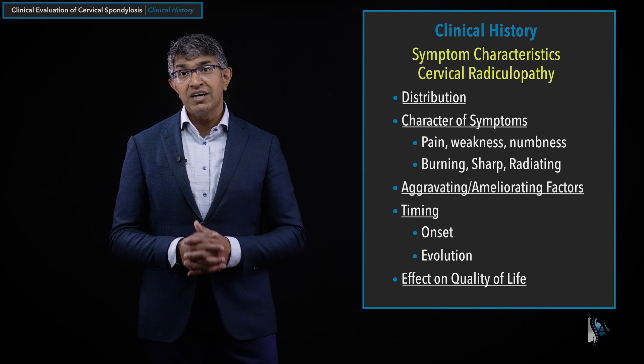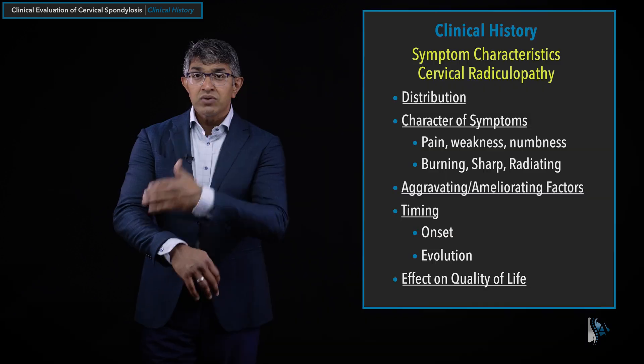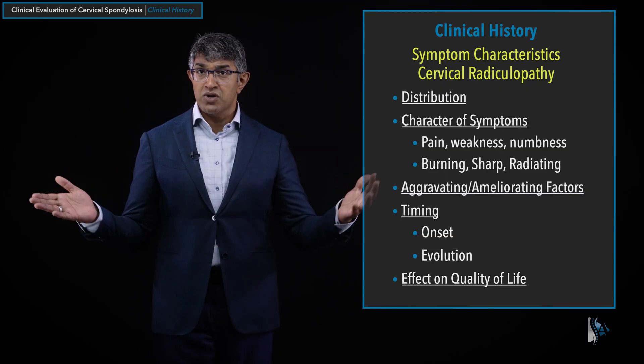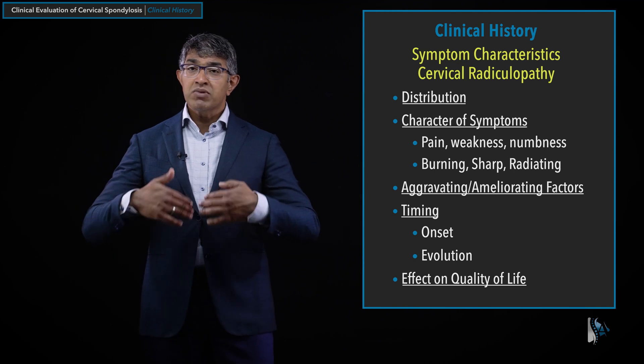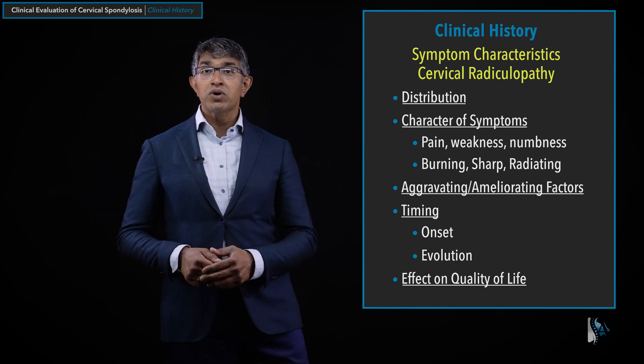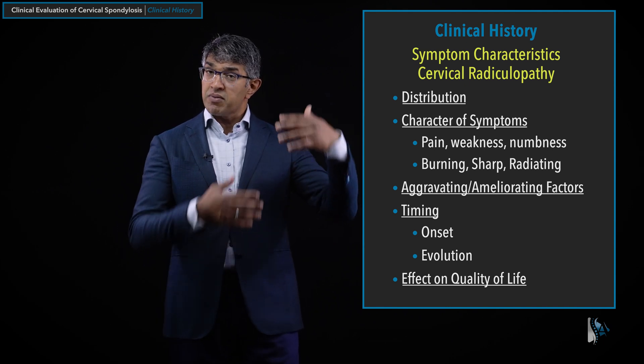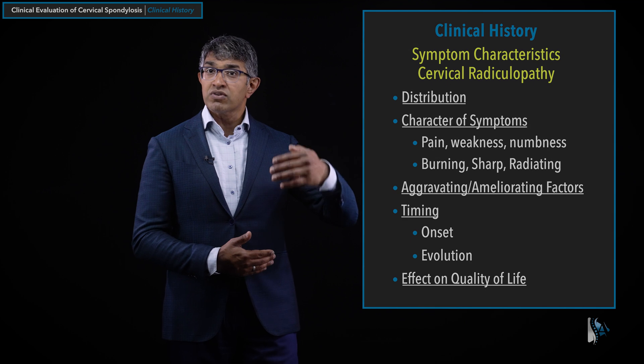Quality of life is also important. A carpenter who has to swing a hammer may be significantly affected by tricep weakness. A C7 radiculopathy can affect people differently depending on whether it's the right or left arm and what their occupation or hobbies are. Understanding how much it affects quality of life is really important in meaningful decision making. That completes the second category of symptoms I ask about in a structured way: cervical radiculopathy.